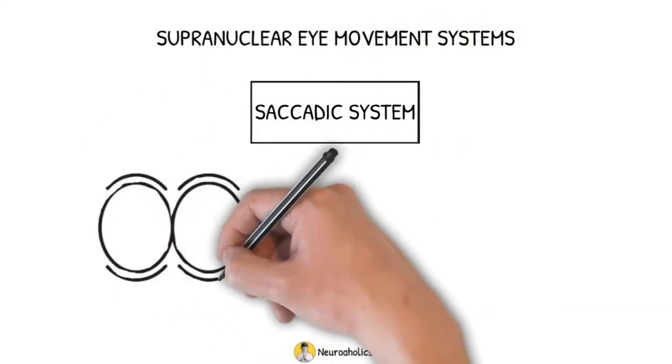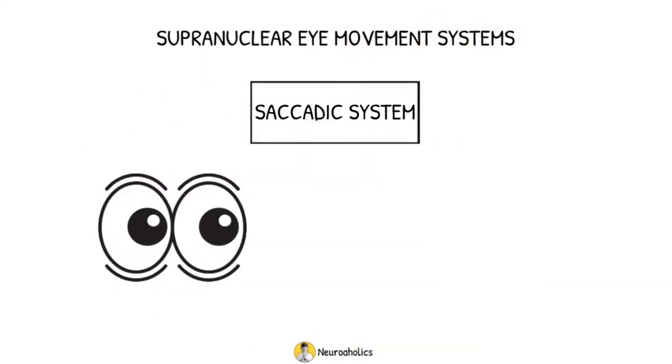It is otherwise known as the fast eye movement system or rapid eye movement system. These are command movements. For example, if we say look to the right, the eyes turn to the right. This occurs rapidly and is a voluntary eye movement.